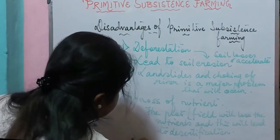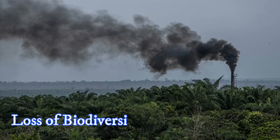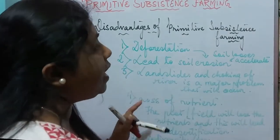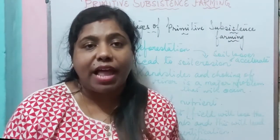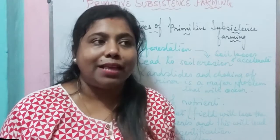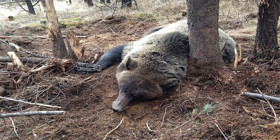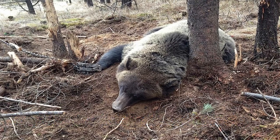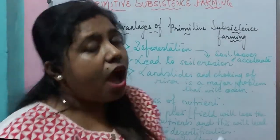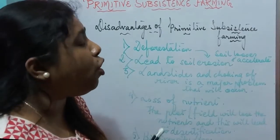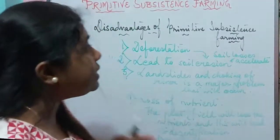Another disadvantage is biodiversity loss. The plants grown in the plot and the animals living there are affected by the burning — plants get burned and animals either die or lose their habitat. This leads to habitat loss for animals. In tropical regions, which are rich in biodiversity, the practice of primitive subsistence farming puts a large number of animals on the verge of extinction, with many becoming endangered.